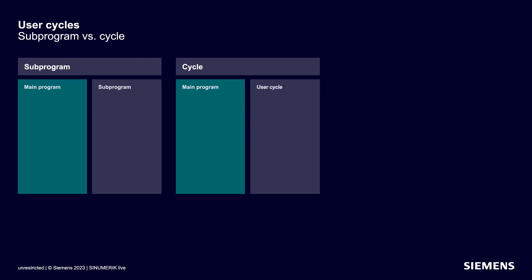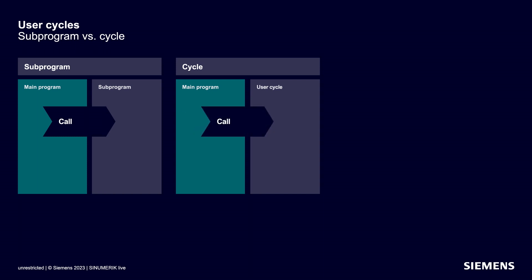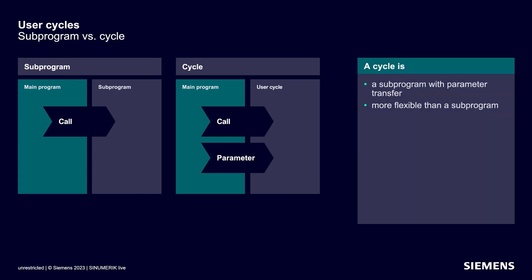Now let's talk about user cycles. The first question is: what is a cycle exactly? In simple terms, classic sub-programs are external program sequences with a name by which they can be called. For cycles, the principle is the same, except that parameters can also be transferred in the call. For example, when a drilling cycle is called, the drilling depth can be transferred directly in the call. So a cycle is actually nothing more than a sub-program with parameter transfer, which makes handling cycles more flexible and means they do not have to be constantly adapted.